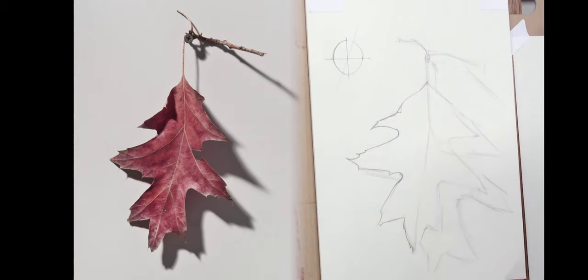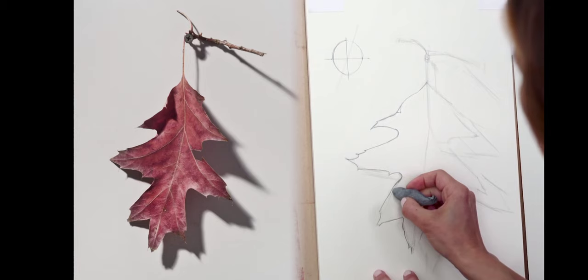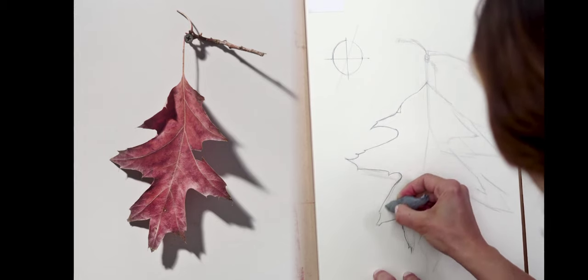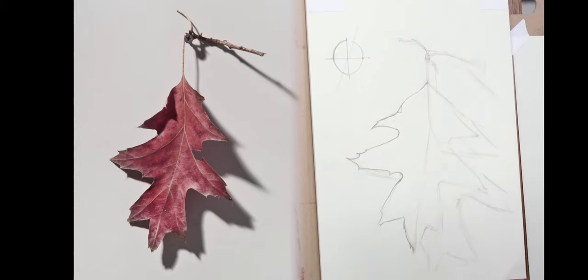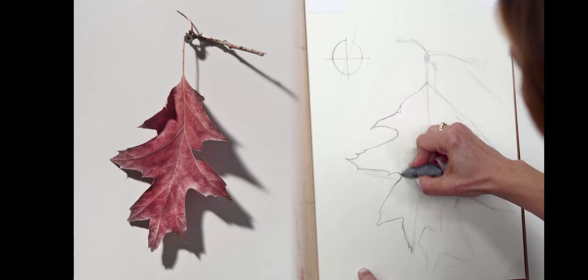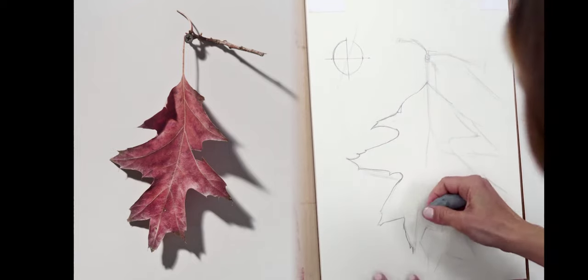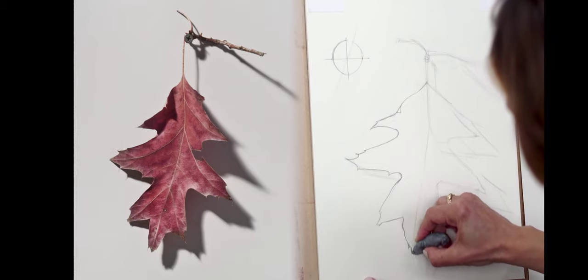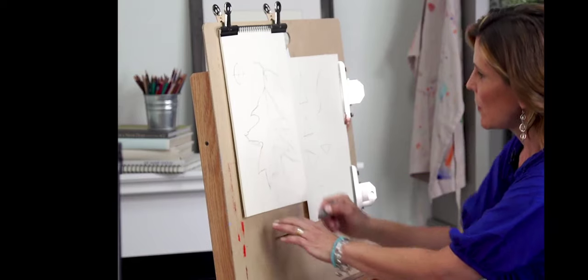So it's always possible to correct your drawing. And now I'll just use my kneaded eraser because I need to kind of make a fine eraser. And pull out that other line. Okay, now I'm going to keep going around the other side of my leaf.